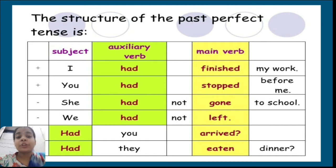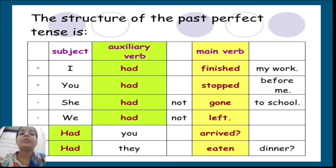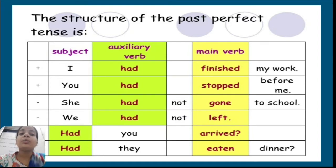Let's see the structure of past perfect tense: subject plus auxiliary verb 'had', then main verb in past participle form, and then the rest part of the sentence. Like 'I had finished my work' — here, 'I' is the subject, 'had' is the auxiliary verb, 'finished' is the past participle form of the word 'finish', and 'my work' is the rest part of the sentence. Another example: 'You had stopped before me.'